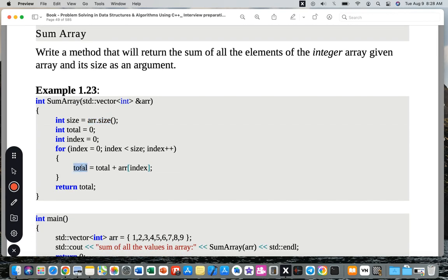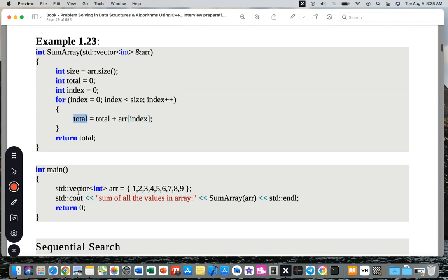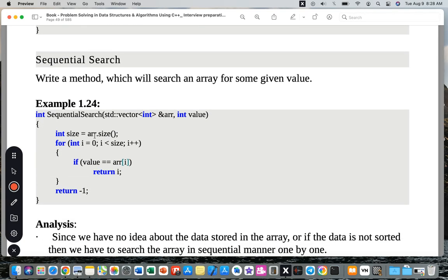This is how to calculate the sum and how to call the function. Sequential search: Write a method which searches an array for some given value. We have the vector or the array and the value, and we search everything sequentially, one by one.